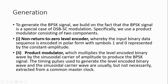The output of the encoder is given into the product modulator. In the product modulator, it multiplies the given signal P(t) with the carrier signal. Timing pulses are used to detect the level encoder signal wave. Sinusoidal carrier signals are extracted from a common master clock. In coherent modulation, the same carrier used in the transmitter side is used in the receiver side.